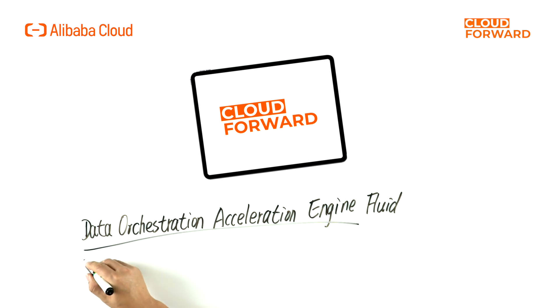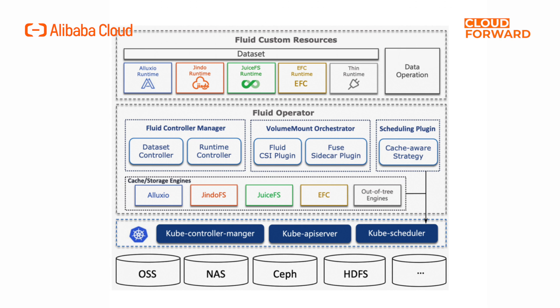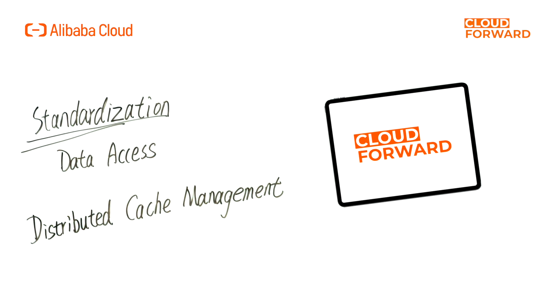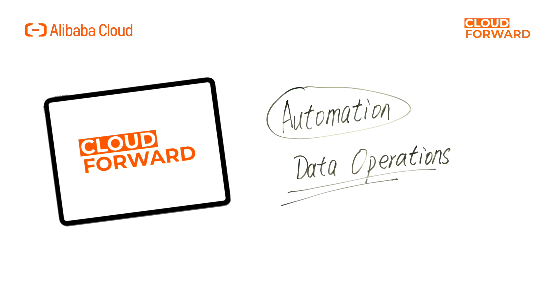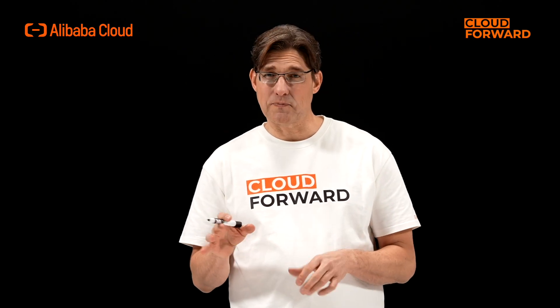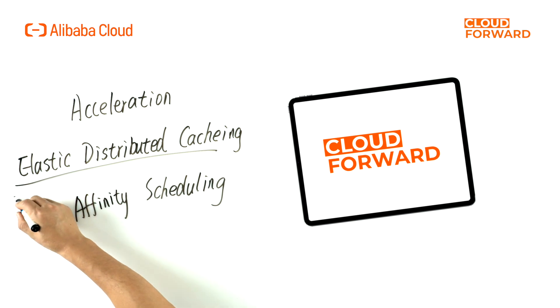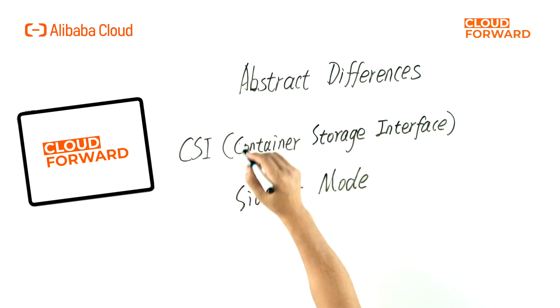The data orchestration acceleration engine Fluid in the ACK Cloud Native AI suite effectively addresses these problems. Fluid is an open-source, Kubernetes-native distributed dataset orchestration and acceleration engine designed for data-intensive applications in Cloud Native scenarios, including big data and AI applications. In terms of standardization, Fluid provides API standardization for data access and distributed cache management. In terms of automation, Fluid supports data operations such as processing, prefetching, migration and cache scaling. In terms of acceleration, Fluid enhances data access efficiency through elastic distributed caching and affinity scheduling.